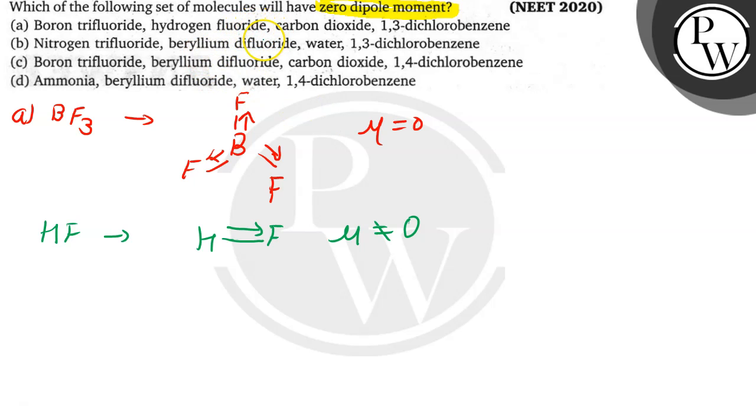Let's check option B. For B, the first compound given to us is nitrogen trifluoride, that is NF3. Its structure will be like this, there will be lone pairs. Due to this lone pair, the net dipole moment will be somewhat downward, means it will have the dipole moment. This dipole moment is not zero, so again option B cannot be our answer.